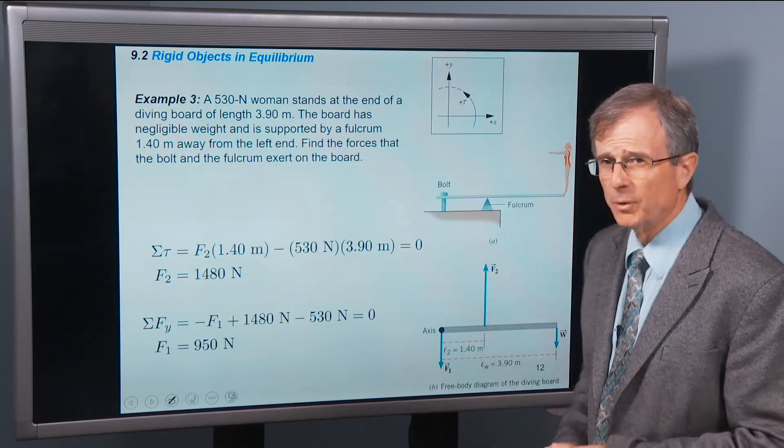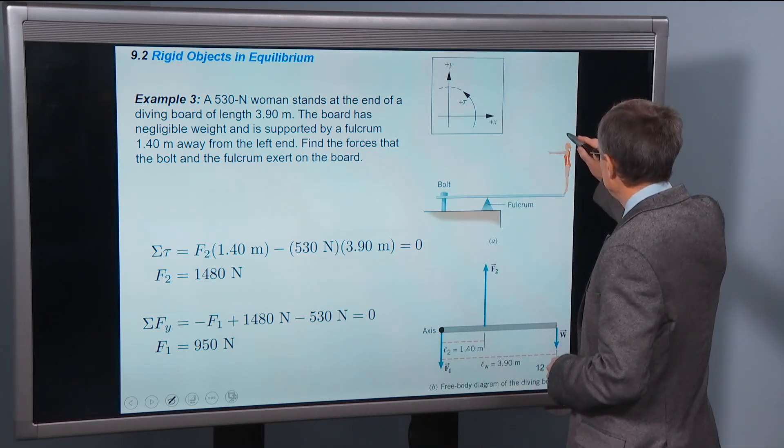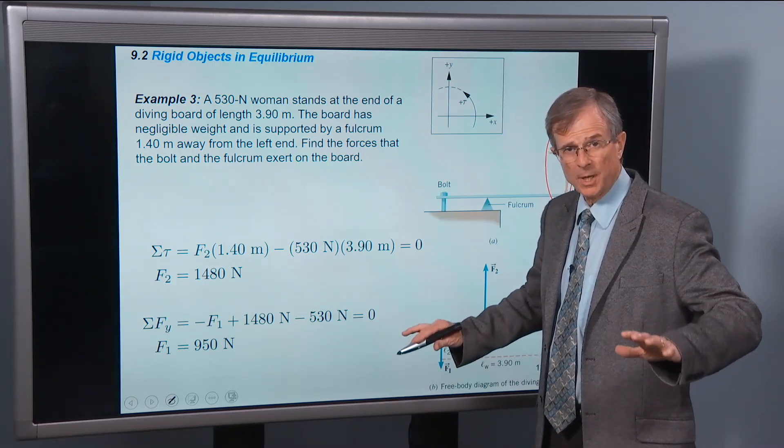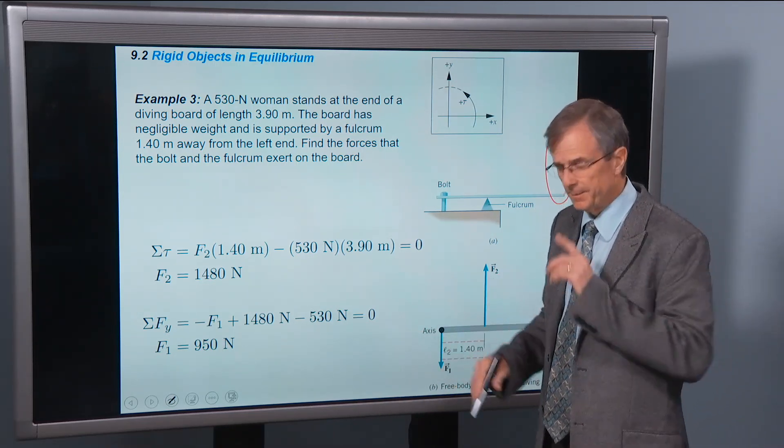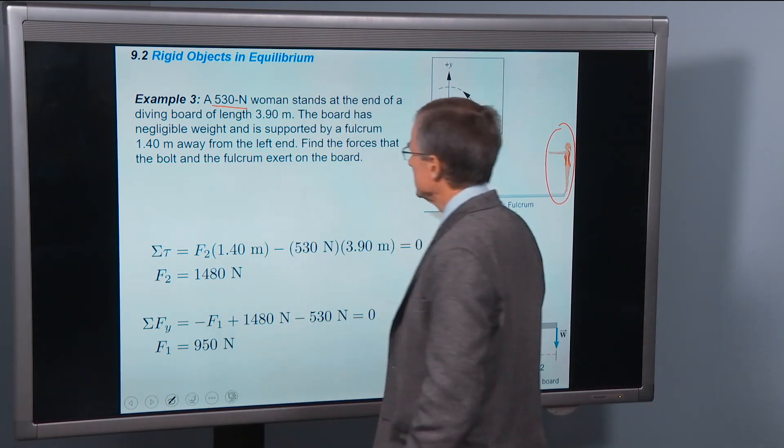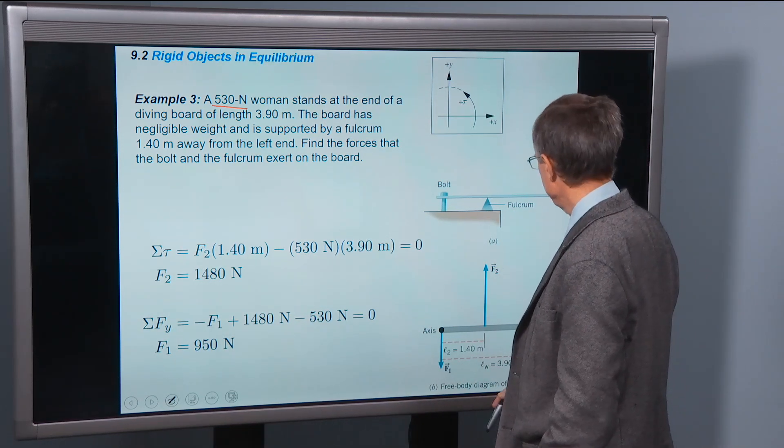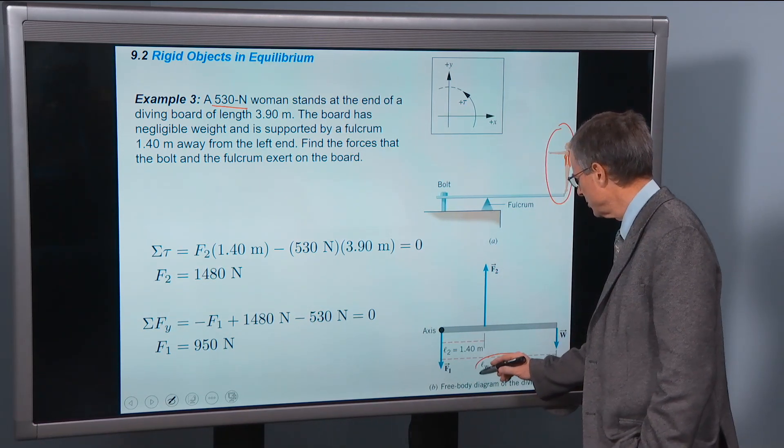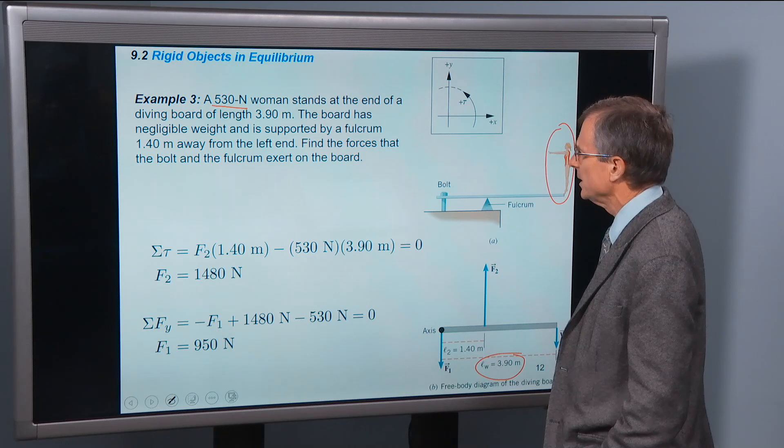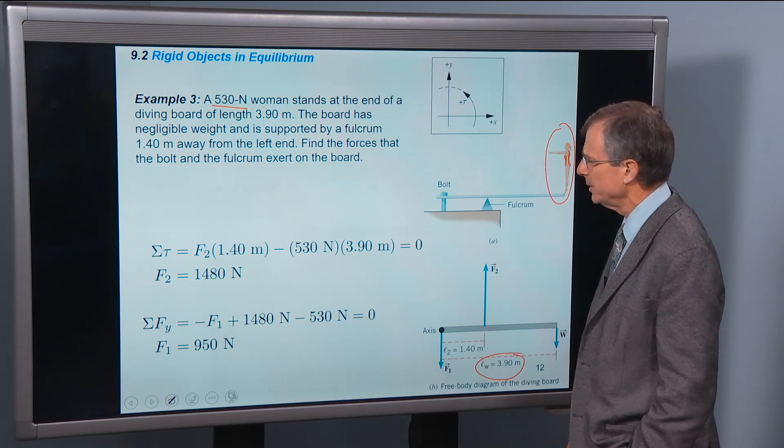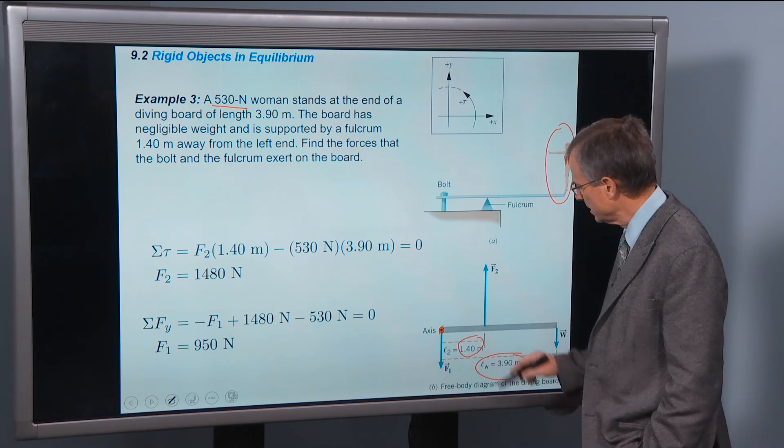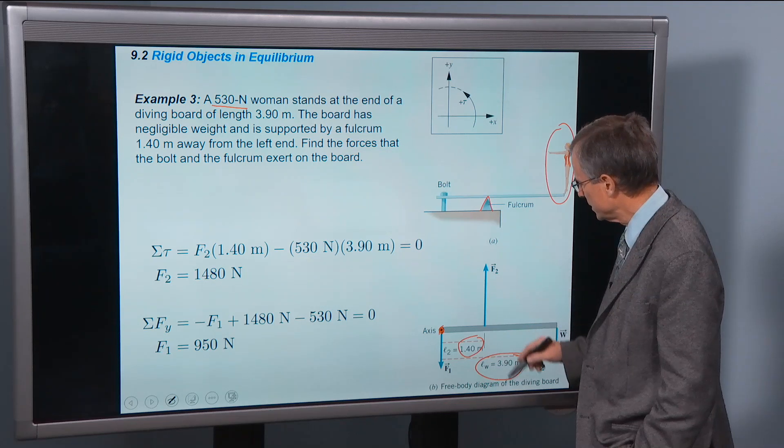Let's do an example. A diver on the end of a diving board, she's just stationary on her toes, not moving, nothing happening. So there's her weight. She stands at the end of a diving board of length 3.9 meters. So that's shown here. The board has negligible weight and is supported by a fulcrum 1.4 meters away from the left end. So that's this number here. Here's the axis. Here's the fulcrum that's supporting it.